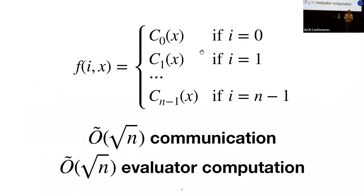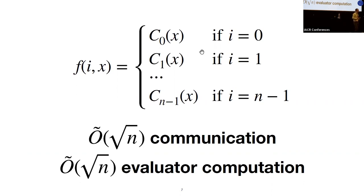In particular, I'm going to show how to achieve compact 2PC for functions of this particular form using roughly square-root communication and evaluator computation.